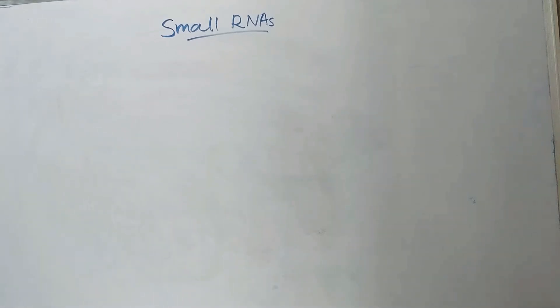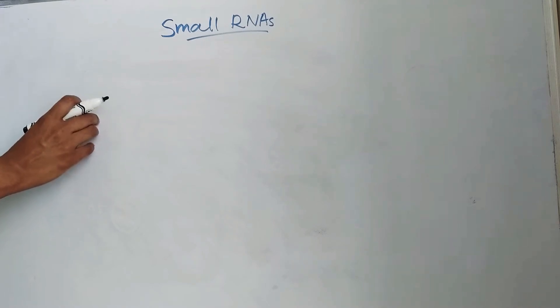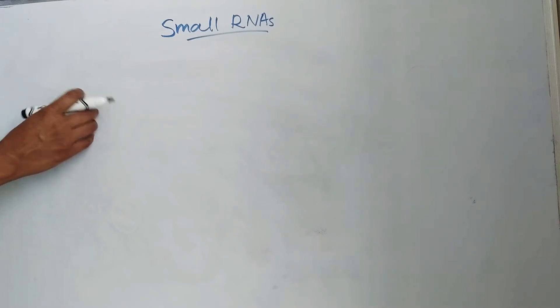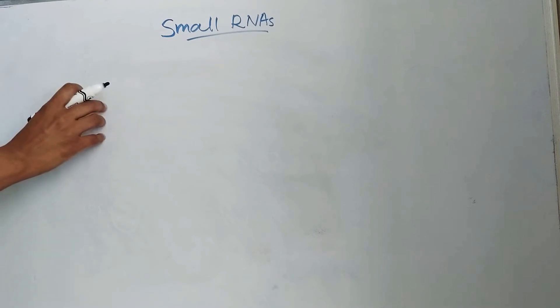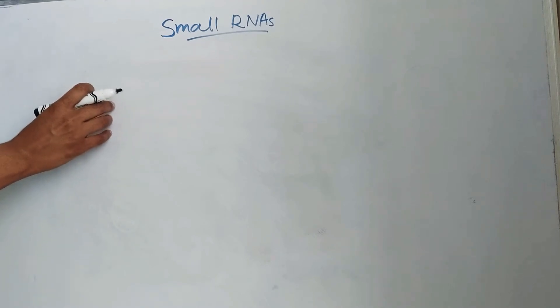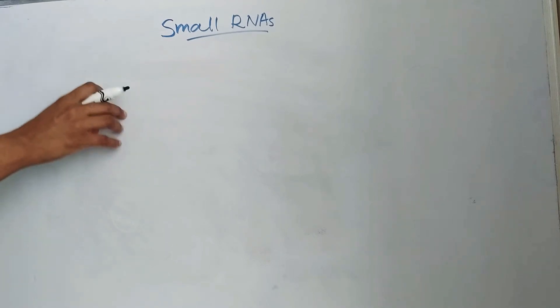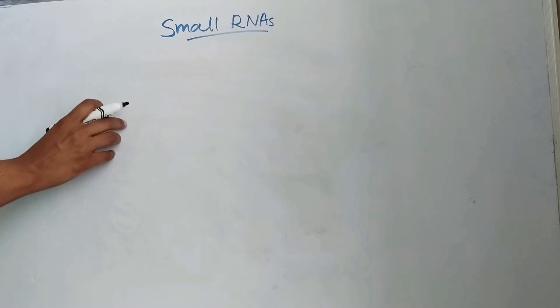Hello everyone. Today we will discuss about small RNAs. Besides mRNA, tRNA, and rRNA, there are some other RNAs. These RNAs are produced by fragmentation of longer precursors. These are known as small RNAs.